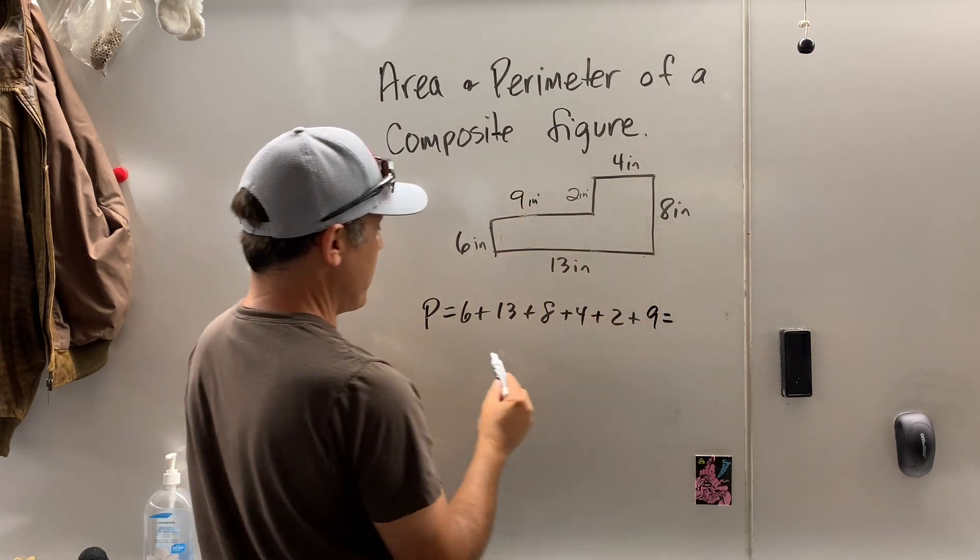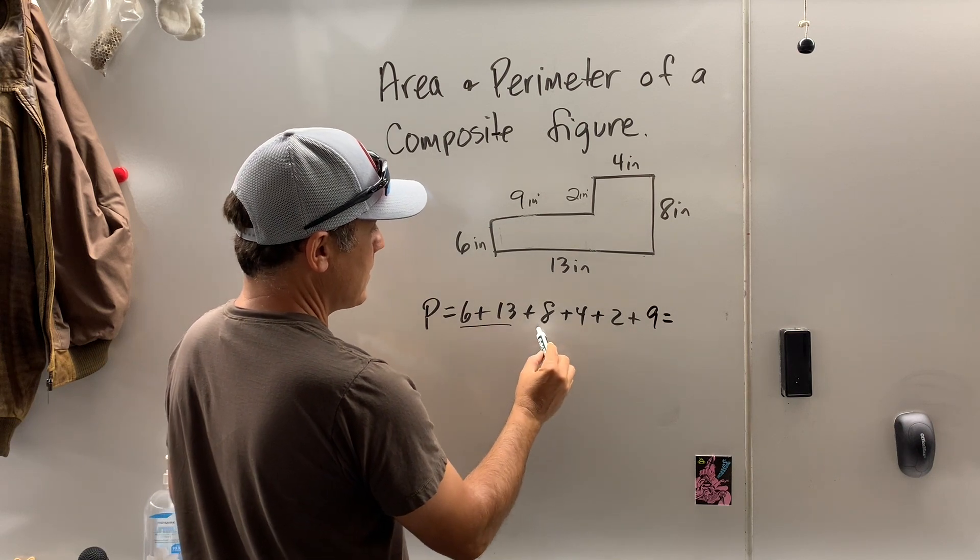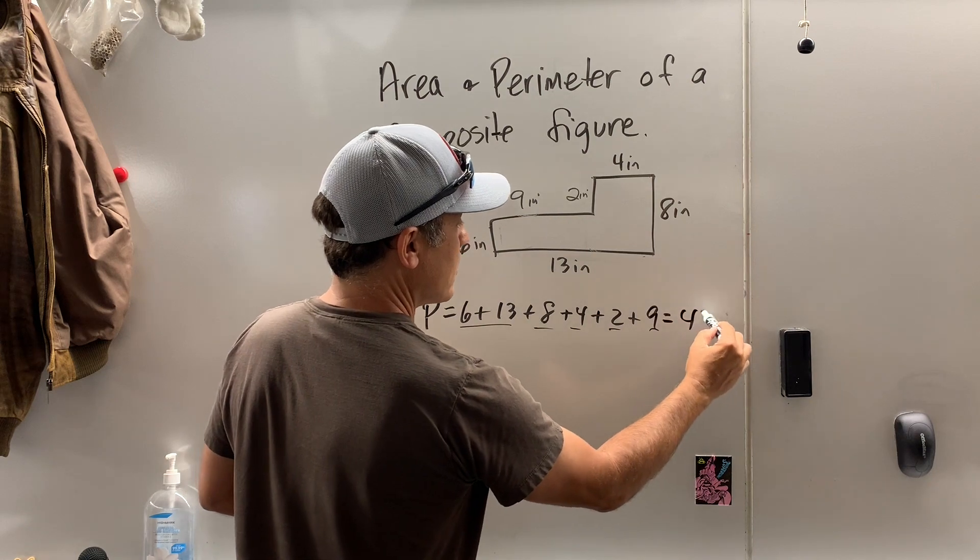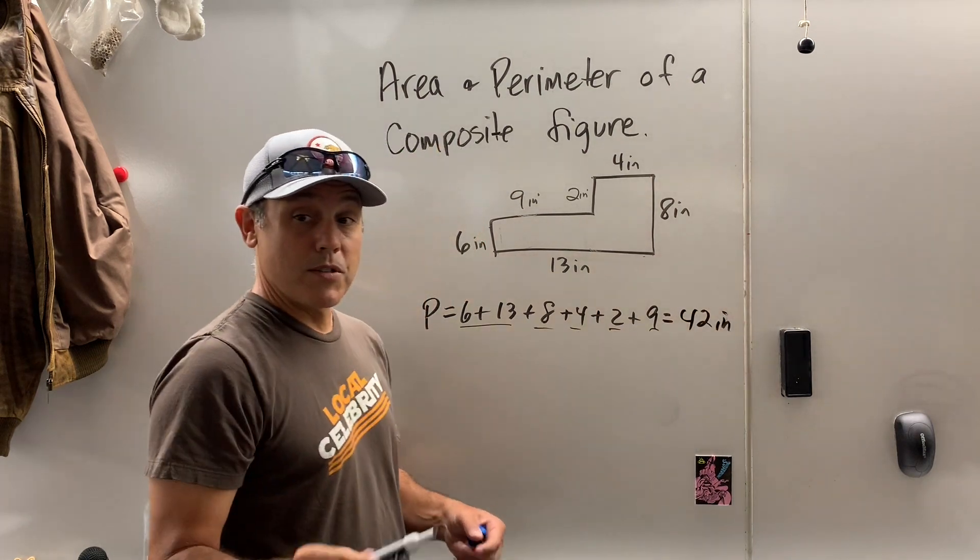9 inches. So let's add it up. What is that? 19, 27, 31, 40, 42. Let's label it 42 inches as the perimeter.